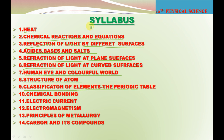Classifications of elements and the periodic table. Chemical bonding. Electric current. Electromagnetism. Principles of metallurgy. Carbon and its compounds. These are the 14 chapters in our textbook.